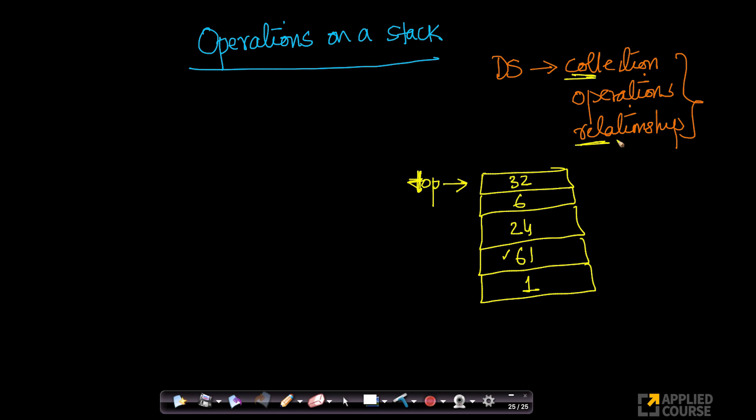So there is this relationship that one book lies on top of the other book, and one book lies below the other book. That type of relationship is there in a stack, but what about operations? We saw that it is a collection of objects in such a way that there is this relationship called one item or one object lies on top of the other.